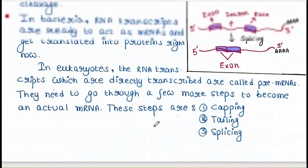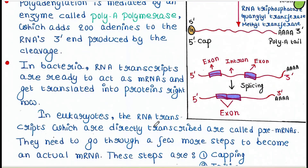Exons are joined and introns are removed. For example, here you can see two exons with an intron in between. The intron is removed and the two exons are joined — this is the splicing method. In the next lecture, I will discuss the splicing mechanism in detail.